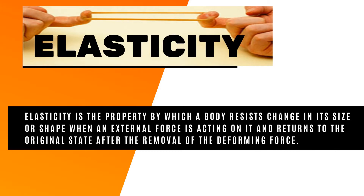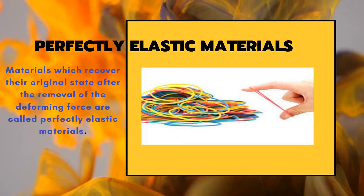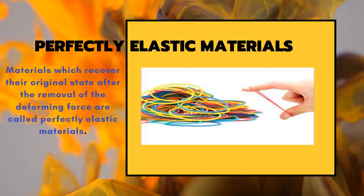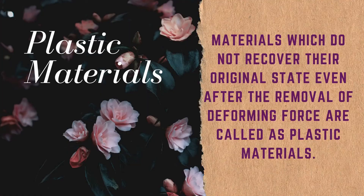Elasticity is a branch of physics which deals with the elastic property of materials. When an external force is applied to a body, there will be some change in its length, shape and volume. When the external force is removed and the body regains its original shape and size, then the body is said to be a perfectly elastic body. If the body does not regain its original shape and size after the removal of the applied force, then it is said to be a perfectly plastic body.